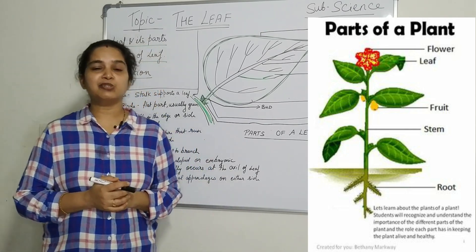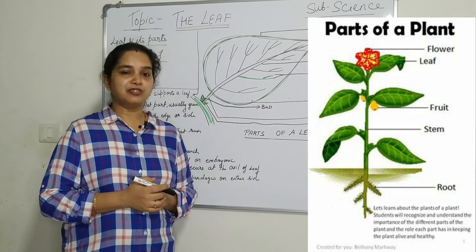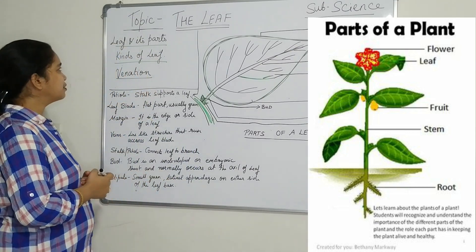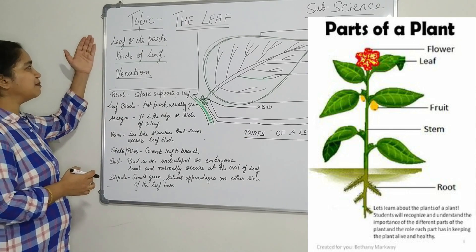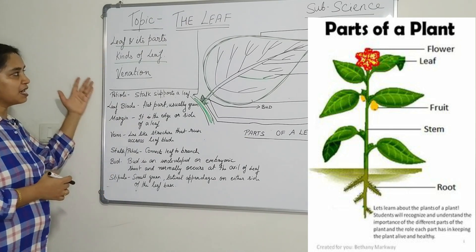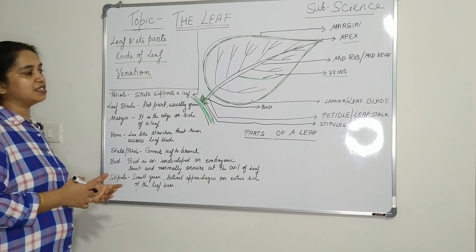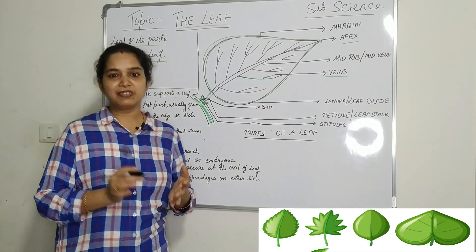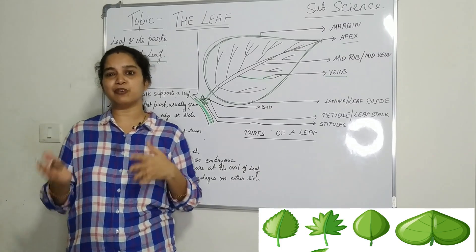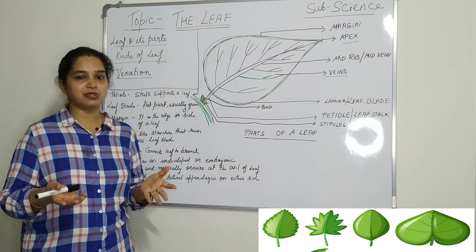Today we are going to study about the leaf. I will introduce you to the leaf. In this chapter, we will study about the leaf and its parts, the different kinds of leaf, and about venation. You might have seen leaves and observed different types of leaves. You are eating different types of leaves also.